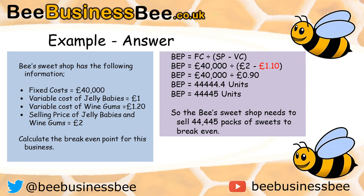We can now take that number and put it into our formula. The breakeven formula is: fixed cost divided by selling price minus variable cost. Our fixed cost is £40,000, our selling price is £2, and our variable cost is £1.10 — that gives us 90p. So £40,000 divided by 90p gives us 44,444.4 units. Since we can't sell 0.4 of a sweet, we round up to 44,445 units to break even.